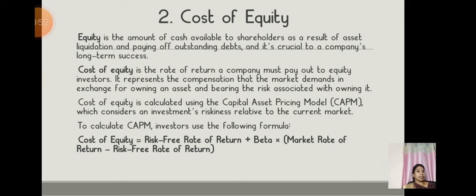Cost of equity can be calculated using the Capital Asset Pricing Model (CAPM), which considers an investment's riskiness relative to the current market. The formula is: Cost of Equity = Risk-Free Rate of Return + Beta × (Market Rate of Return − Risk-Free Rate of Return).